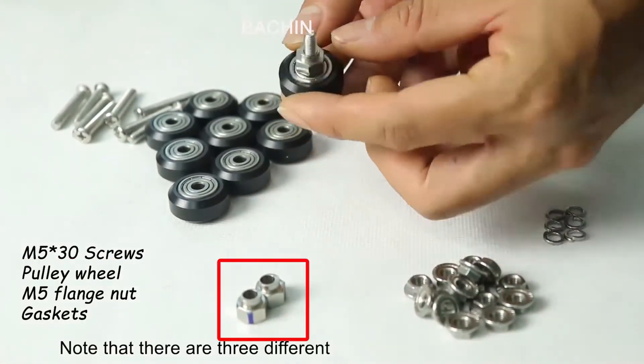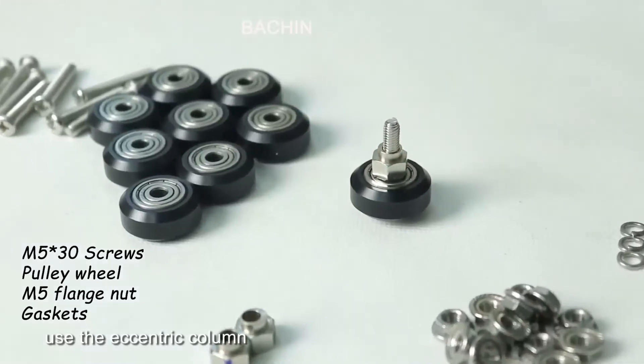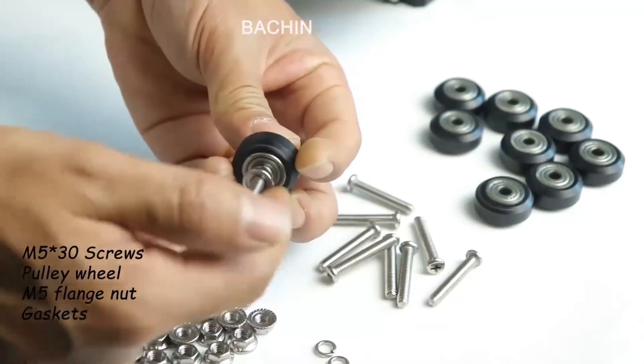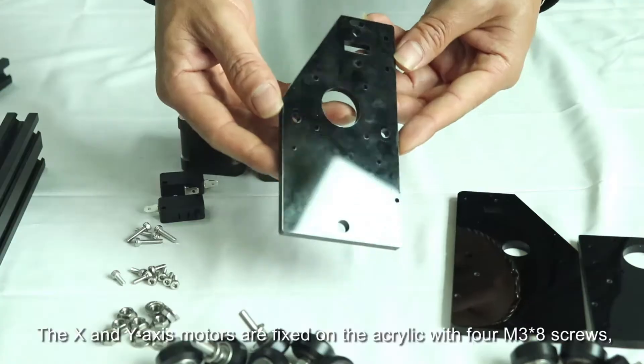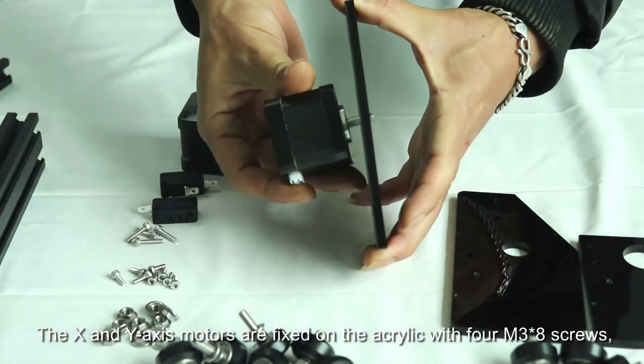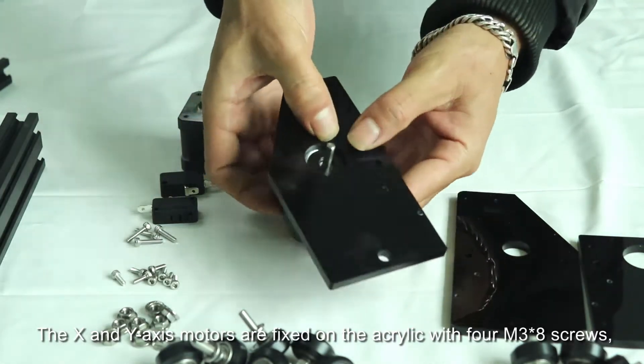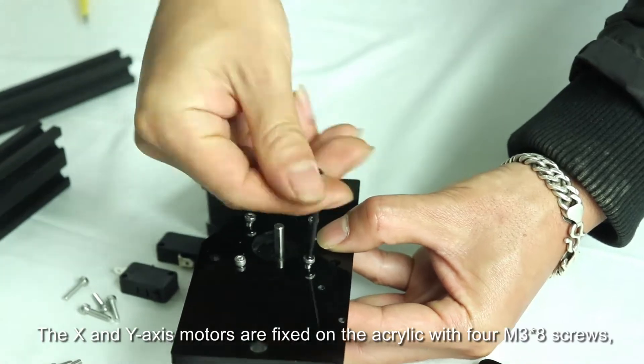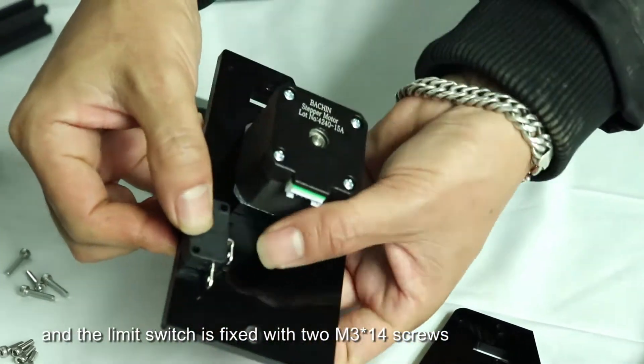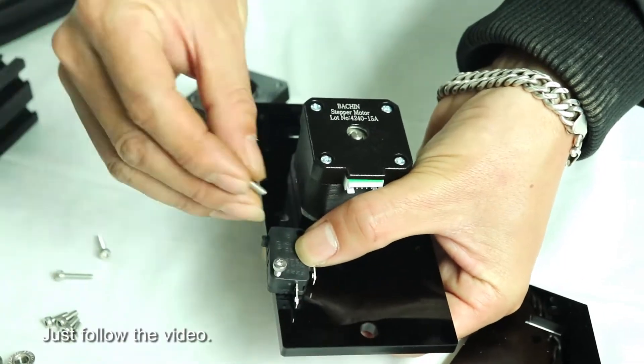Note that there are three different types. One uses the eccentric column and the other uses the flange nut. The X-axis and Y-axis motors are fixed on the acrylic with M3x8 screws and the limit switch is fixed with 2 M3x14 screws. Just follow the video.